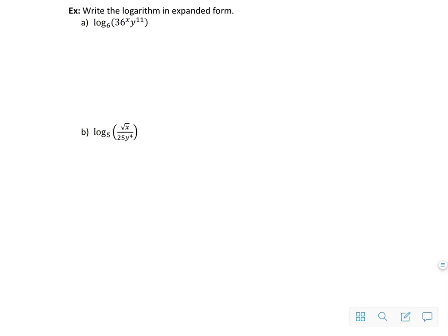Let's do part b. Now I've got a log of a quotient. So I'm going to take the log of the numerator, log base 5 of square root of x, and subtract log base 5 of the denominator, which is 25y to the 4th.